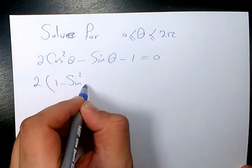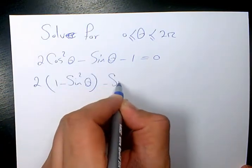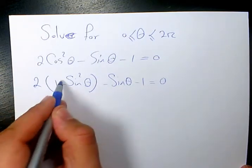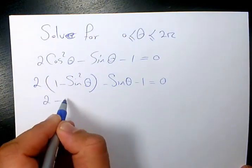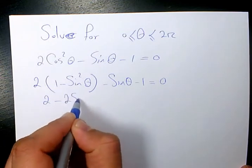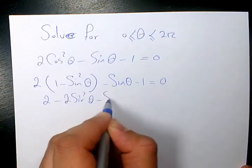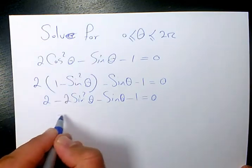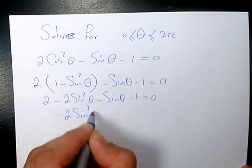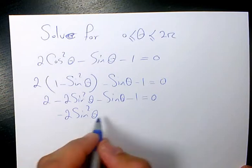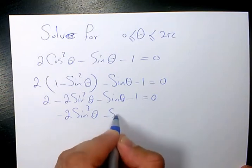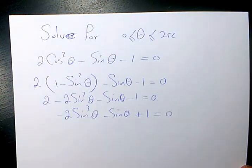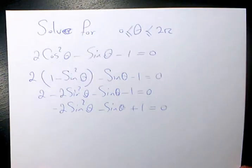So instead of cosine squared theta I can write 1 minus sine squared theta. After substituting: 2(1 minus sine squared theta) minus sine theta minus 1 equals 0. Distributing gives us 2 minus 2 sine squared theta minus sine theta minus 1 equals 0, which simplifies to negative 2 sine squared theta minus sine theta plus 1 equals 0.